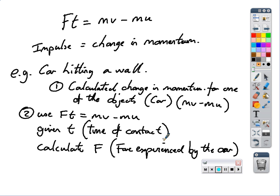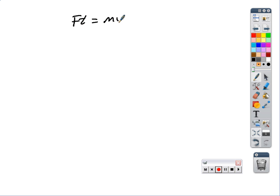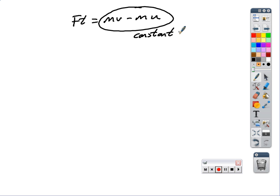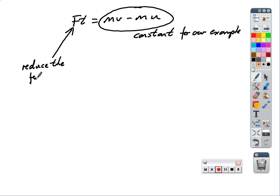So if we have the formula Ft equals mv minus mu and we want to reduce the force experienced by the car, we must increase the time the car is in contact. The right-hand side, mv minus mu, is constant for our example — the collision has already happened. If the right-hand side is constant and we increase T, then the force F must decrease.